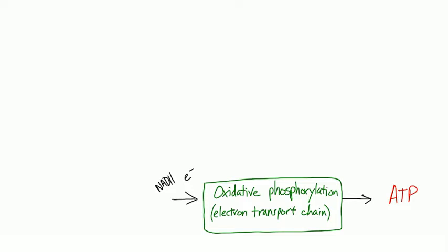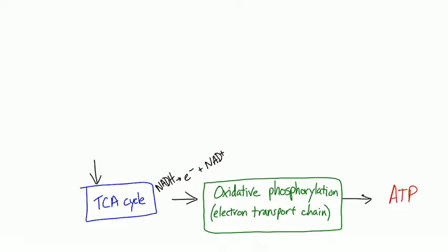NADH is an electron donor, and when NADH donates an electron it becomes NAD+. For the electron transport chain to work, we need a steady supply of NADH electron donors - that's one of the big functions of the TCA cycle. The TCA cycle also makes a little bit of ATP, but the main purpose is to generate NADH. To keep the TCA cycle going we need acetyl-CoA.